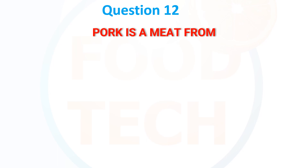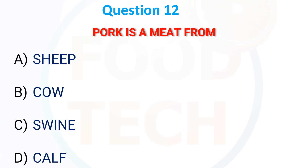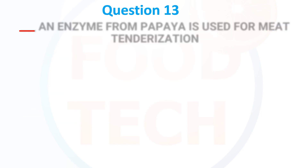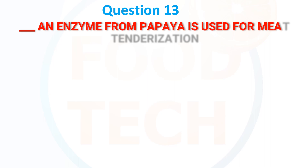Pork is a meat from: A) Sheep, B) Cow, C) Swine, D) Cub. The answer is Swine. The enzyme from papaya used for meat tenderization is: